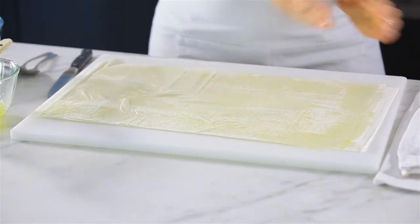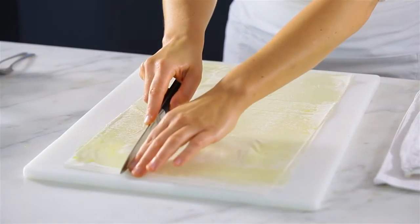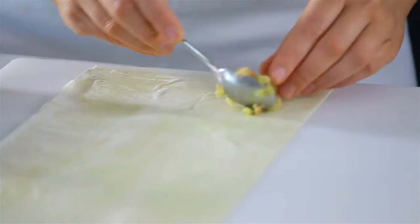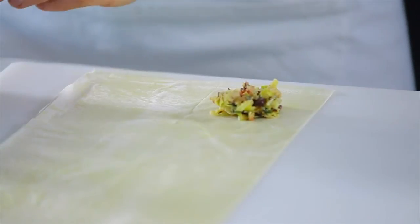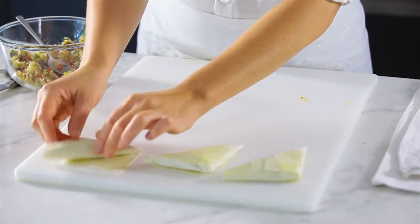To make the cheese, olive and tomato triangles, cut your sheet of phyllo into three long strips. Place a little bit of the mixture at the end of one of the strips and fold over to create a triangle.